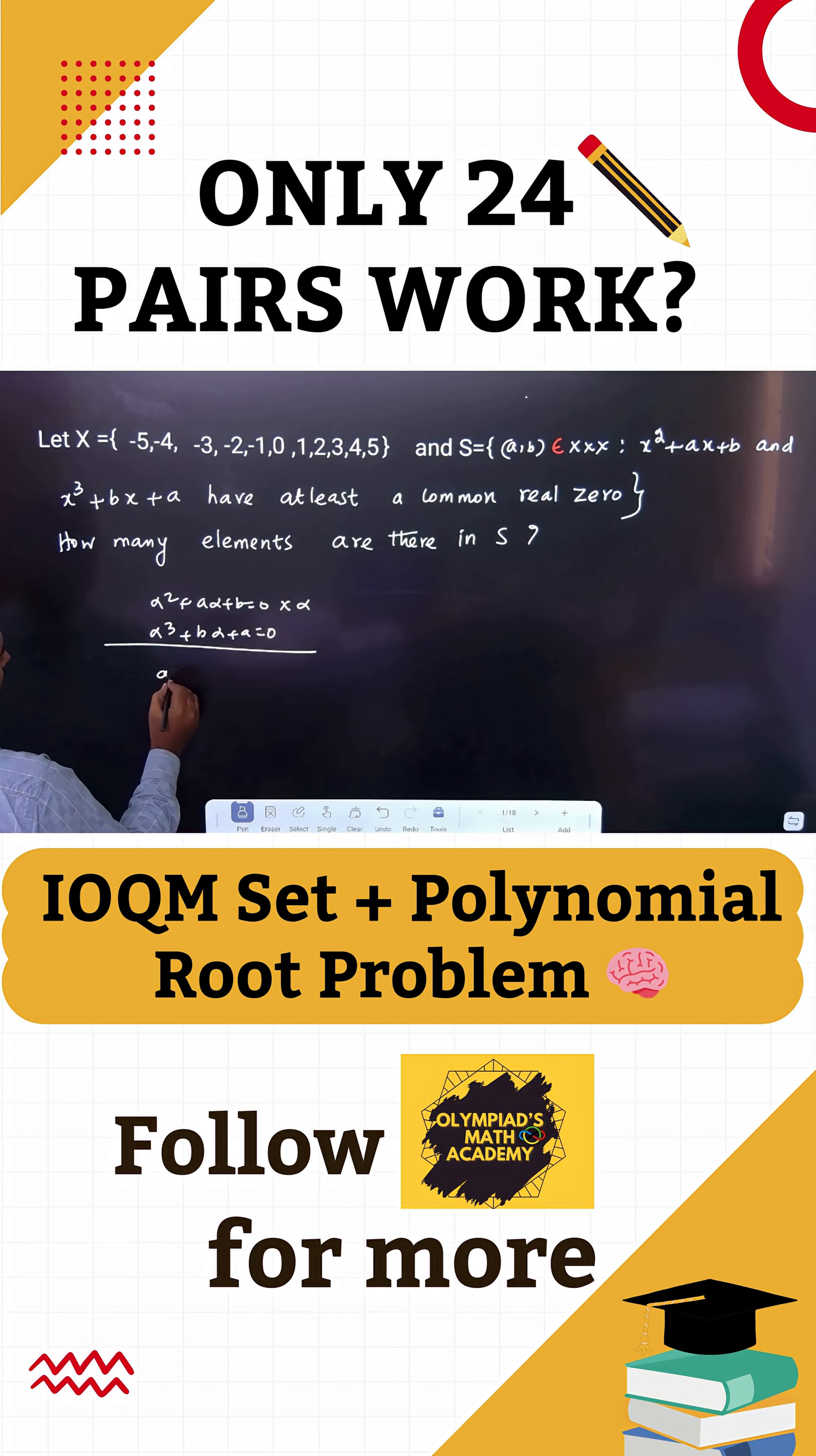Then we get A alpha squared minus B alpha plus B alpha minus A equals 0. This cancels, and taking A common: A times (alpha squared minus 1) equals 0. Either A equals 0 or alpha equals plus or minus 1.